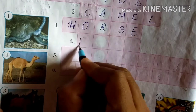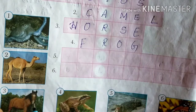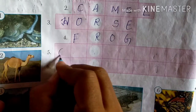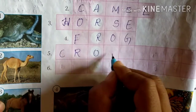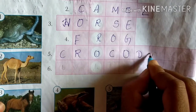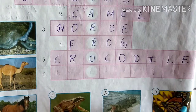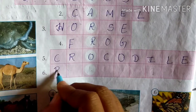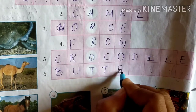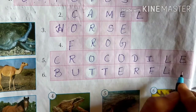The fourth picture is frog — F-R-O-G. The fifth picture is a crocodile — C-R-O-C-O-D-I-L-E. The sixth picture is a butterfly — B-U-T-T-E-R-F-L-Y.